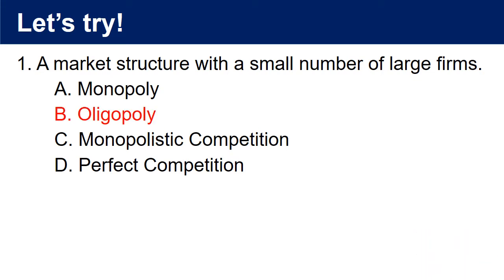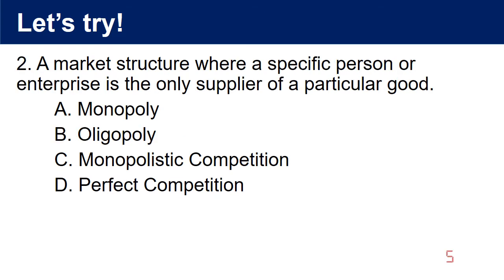Question 2: A market structure where a specific person or enterprise is the only supplier of a particular good. A. Monopoly. B. Oligopoly. C. Monopolistic competition. D. Perfect competition.